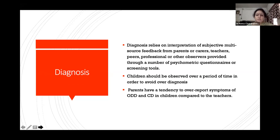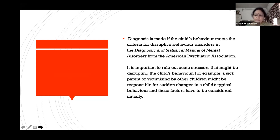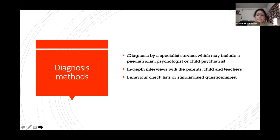When a child is behaving badly, we should not immediately brand them with a behavioral disorder. Information should come from different sources — parents, teachers, caregivers, classmates, and professionals — all together providing inputs before reaching a diagnosis. We observe the child over a period of time because parents generally give a worse report than teachers. We need a pediatrician, psychologist, or child psychiatrist conducting in-depth interviews with parents, children, and teachers, along with validated questionnaires, to confirm the diagnosis.